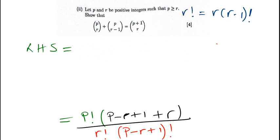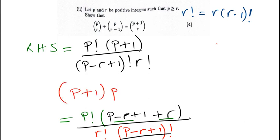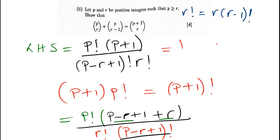Our left hand side has now reduced to p factorial times the bracket. Since r and minus r are like terms they cancel, and we remain with p plus one in the brackets. So we have p plus one times p factorial over p minus r plus one factorial times r factorial. Now, p plus one times p factorial is the same as p plus one factorial.